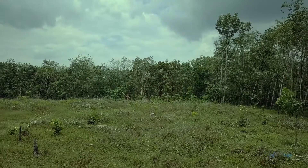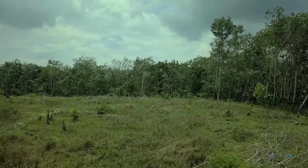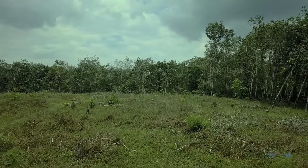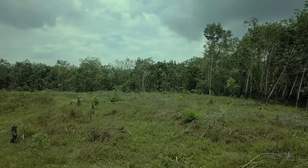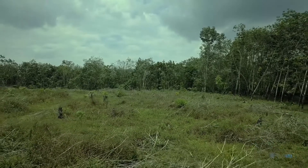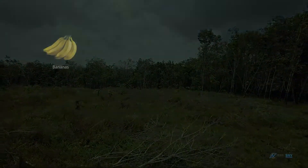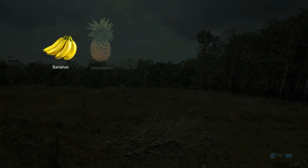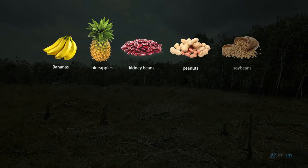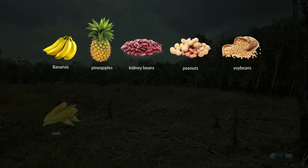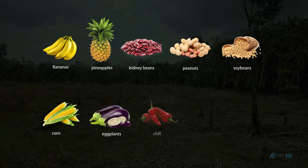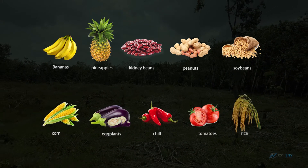Some agroforestry techniques can be applied when establishing a new rubber plantation. Horticultural plants that can be intercropped with rubber include bananas, pineapples, kidney beans, peanuts, soybeans, corn, eggplants, chili, tomatoes, and rice.